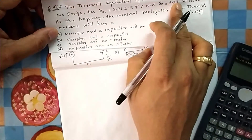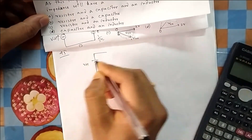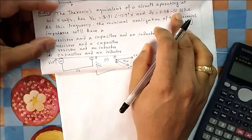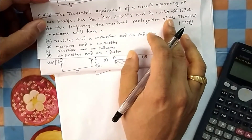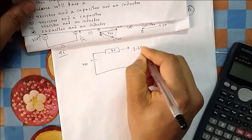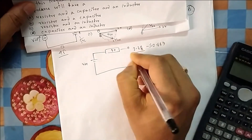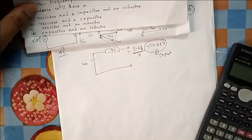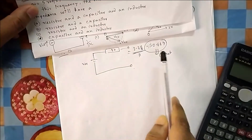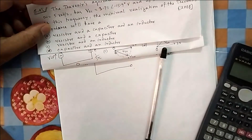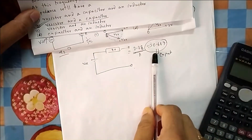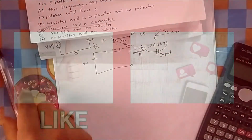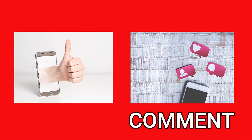Question 45: the Thevenin equivalent of a circuit operating at a given omega has Voc and Zth already given. The Thevenin impedance is 2.38 minus j0.667. The real part means a resistance is needed; the negative imaginary part means a capacitor is needed. For minimum elements, you need one resistor and one capacitor. A capacitor alone gives the minus sign, so the minimum realization is a resistance and a capacitor. That's all for today — if you liked the video, press like and leave your comments.